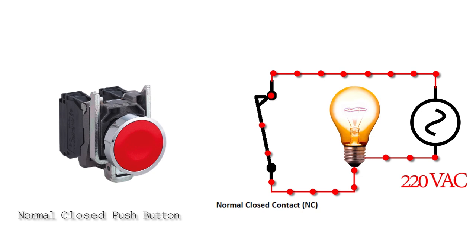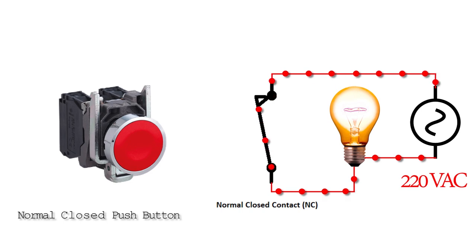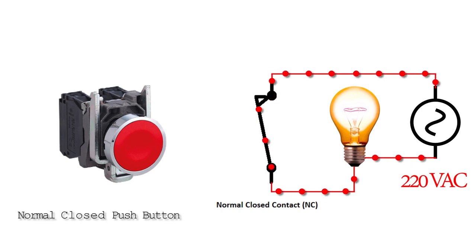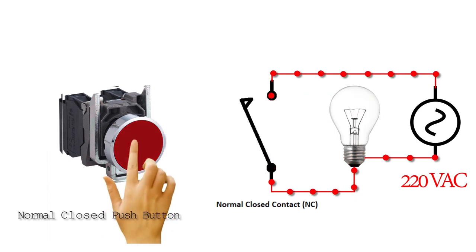Now let's see how a normally closed push button works. It's exactly opposite to the normally open push button. The normally closed push button has NC or normally closed contacts. Let's put a normally closed push button in series with a bulb and a power source. The bulb turns on because of the NC contact. If we press the push button, the bulb turns off as the NC contact opens and cuts the path for current to flow.